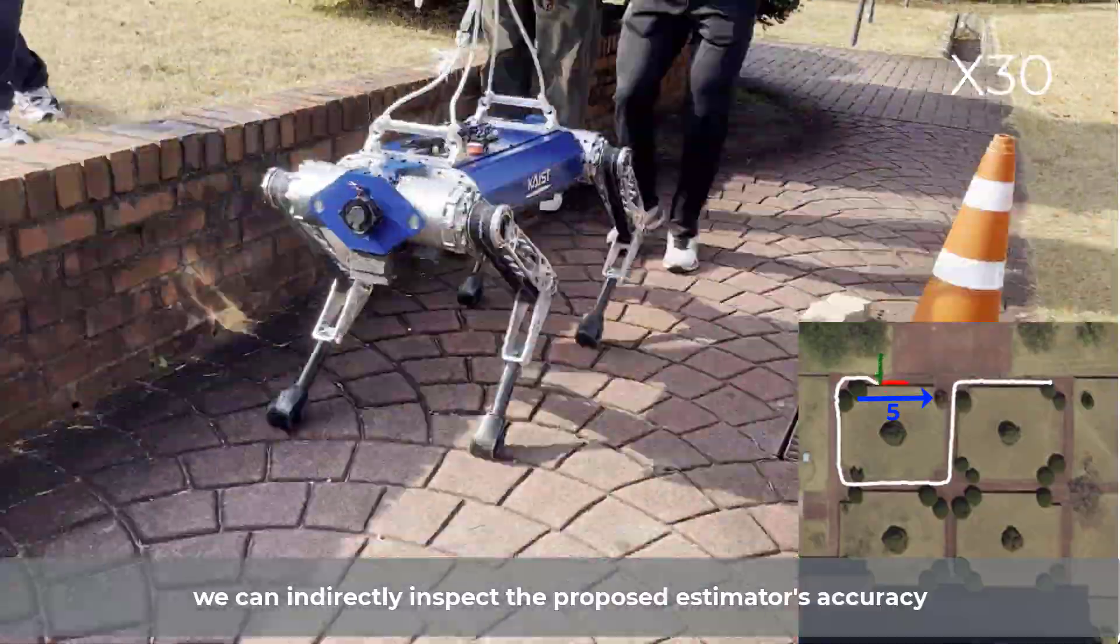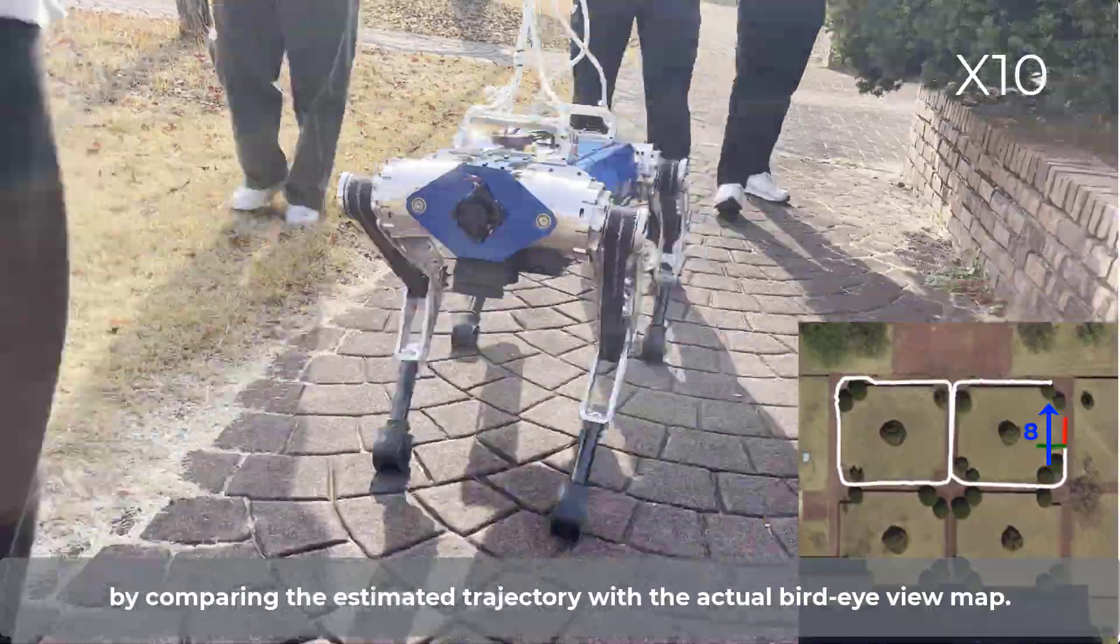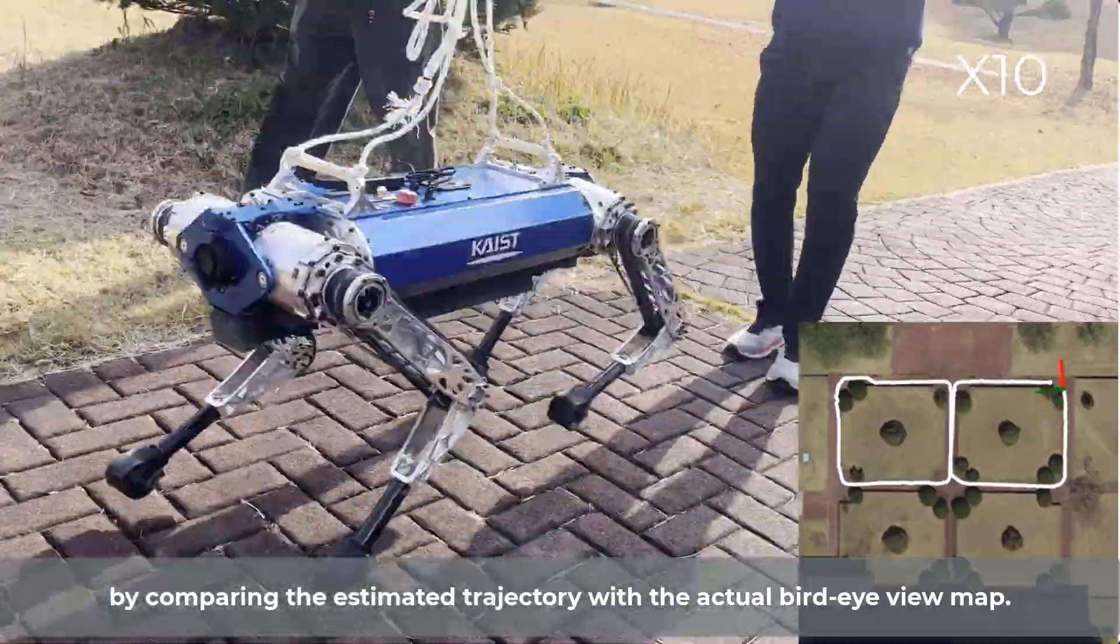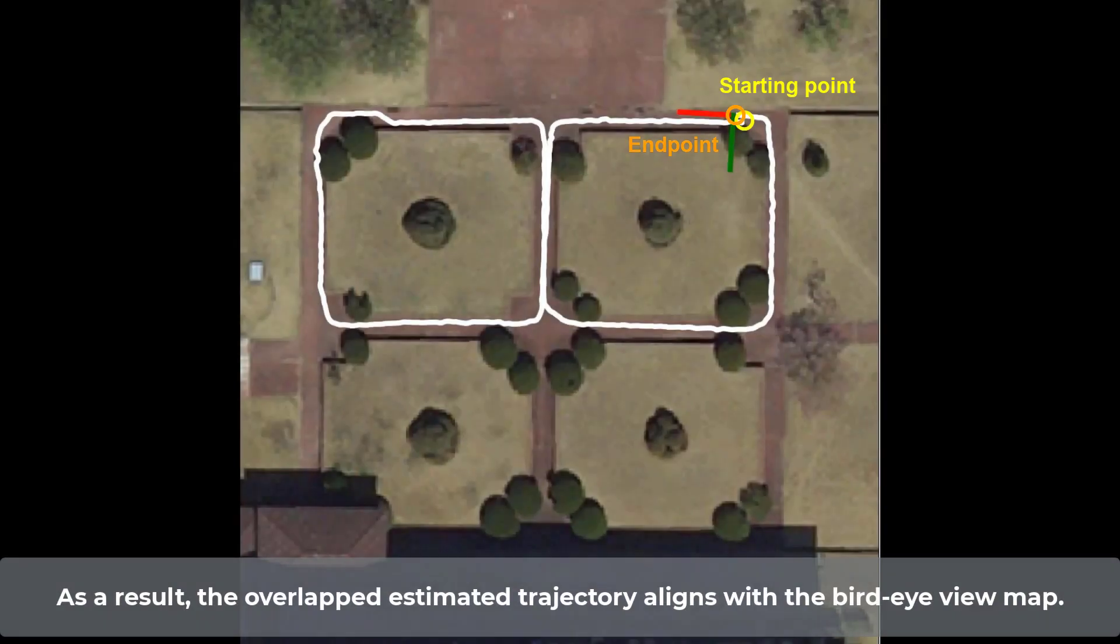we can indirectly inspect the proposed estimator's accuracy by comparing the estimated trajectory with the actual bird-eye view map. As a result, the overlapped estimated trajectory aligns with the bird-eye view map. Thanks for watching.